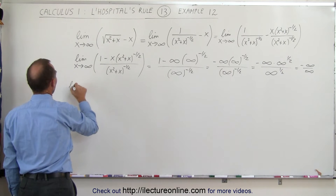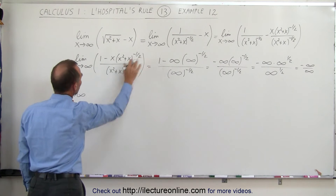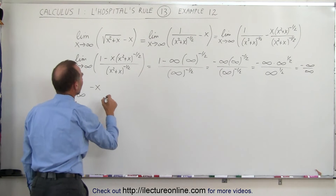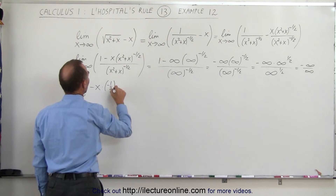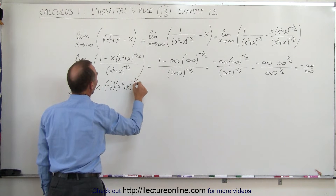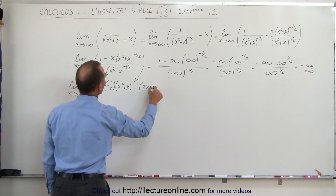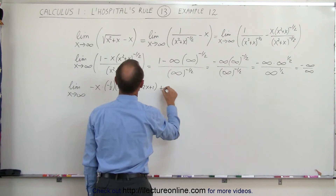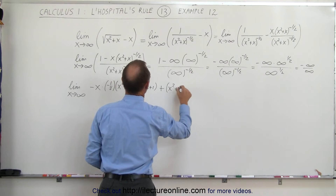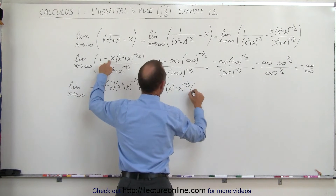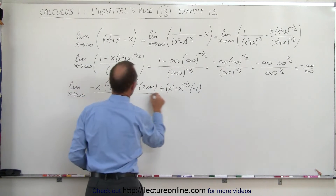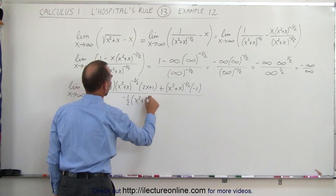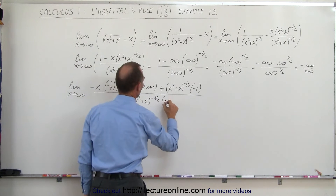This is equal to the limit as x approaches infinity. Taking the derivative of the numerator — this is a product. The derivative of 1 is 0. The numerator becomes: the first, which is minus x, times minus 1 half, times x squared plus x to the minus 3 halves, times the derivative of what's inside, which is 2x plus 1. Since it's a product, it's the first times the derivative of the second, plus the second — which is x squared plus x to the minus 1 half power — times the derivative of the first, which is minus 1. The whole thing is divided by the derivative of the denominator, which is minus 1 half times x squared plus x to the minus 3 halves, times the derivative of inside, which is 2x plus 1.